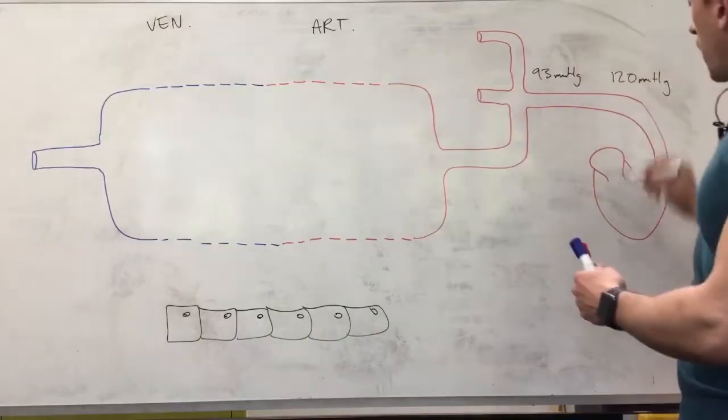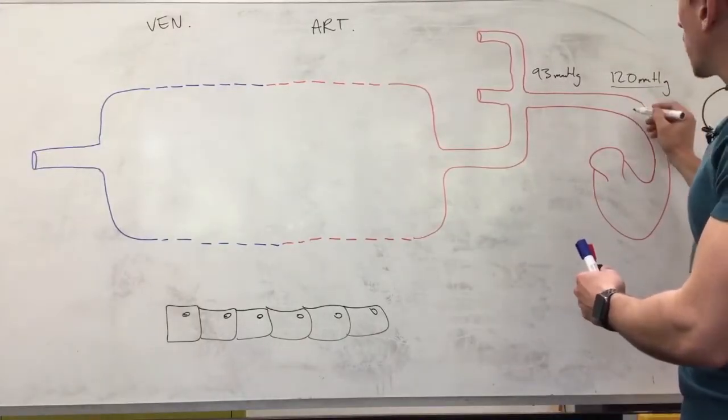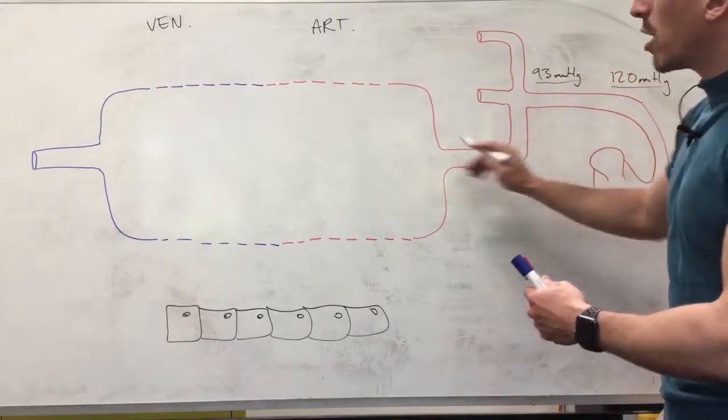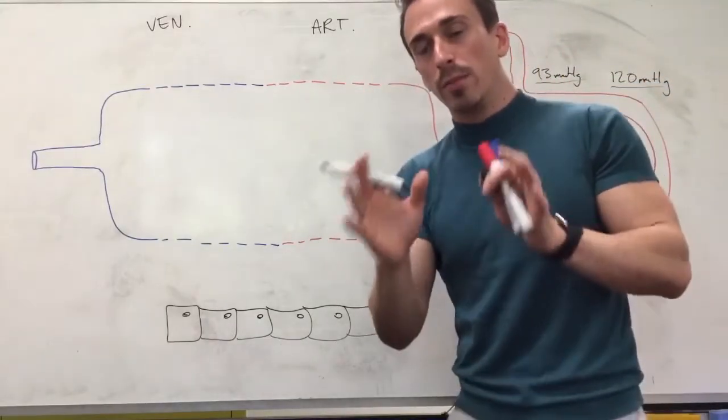So as the blood moves through from the left ventricle to the aorta 120 millimeters of mercury, then as it branches off it's around about 93 millimeters of mercury, then by the time it gets to the capillary bed the pressure is 30 millimeters of mercury.